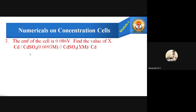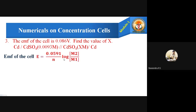The third problem: the EMF of the cell is 0.086 V. Find the value of x for the cell: Cd | CdSO4 (0.0093 M) ‖ CdSO4 (x M) | Cd. Here x is the unknown concentration M2, M1 is 0.0093 M, and the EMF is given as 0.086 V. Applying the formula E = 0.0591 / n × log(M2 / M1), and since cadmium is divalent, n equals 2. Substituting: 0.086 = 0.0591 / 2 × log(x / 0.0093).